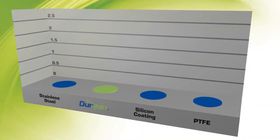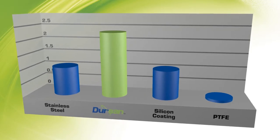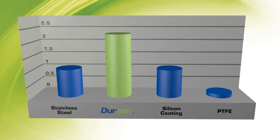Wear studies prove Dursan outperforms stainless steel, silicon, and PTFE coupons by a factor of two or more.